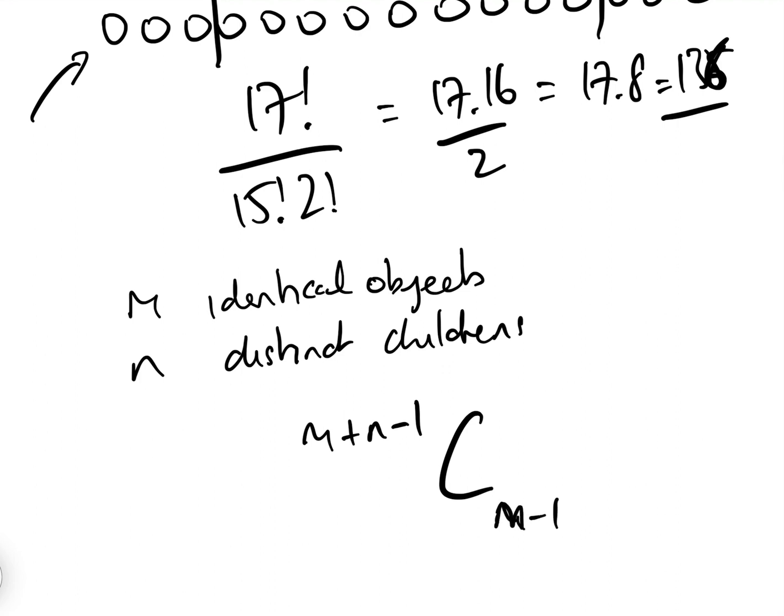So in our example where there were 21 identical objects and three distinct children, it will be 21 add 3 minus 1, which is 23 C2. And basically when we'd taken the six apples out, it was 15 add 3 minus 1, which is 17 C2.